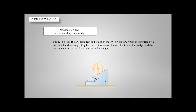Here's an example about it. As you can see, there is a block sliding on a wedge. This wedge is located on a horizontal surface. We are given the weights of the block, and we need to know that these objects can be treated as particles and denoted with letters B and A.